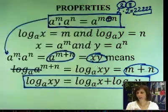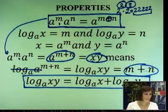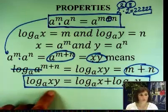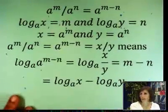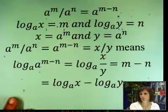When you have A to the M, A to the N, you add the exponents. When you're taking logarithm of a product, you end up adding the logarithms.